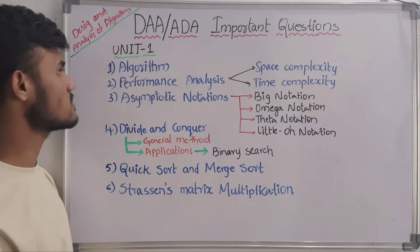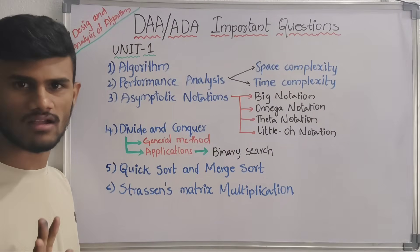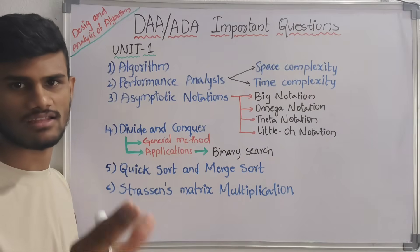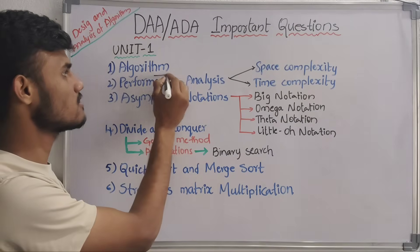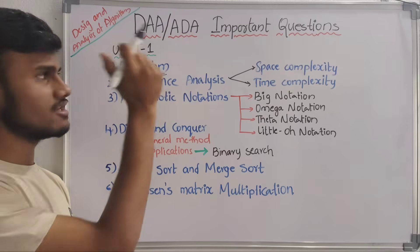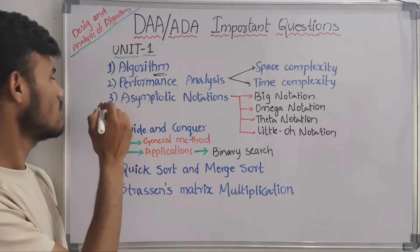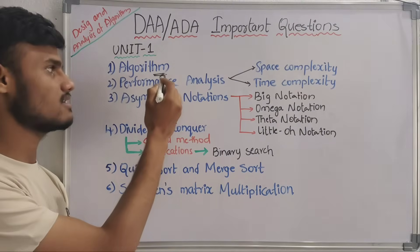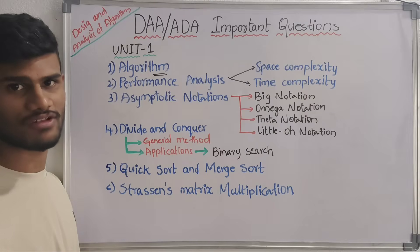Coming to our first topic: algorithm. It is maximum 2 marks. Algorithm introduction, definition — maximum algorithm is definition. So this first question is completely of definition. When you want to explain the algorithm, you can explain the algorithm. This is the first topic — algorithm definition, simple definition.